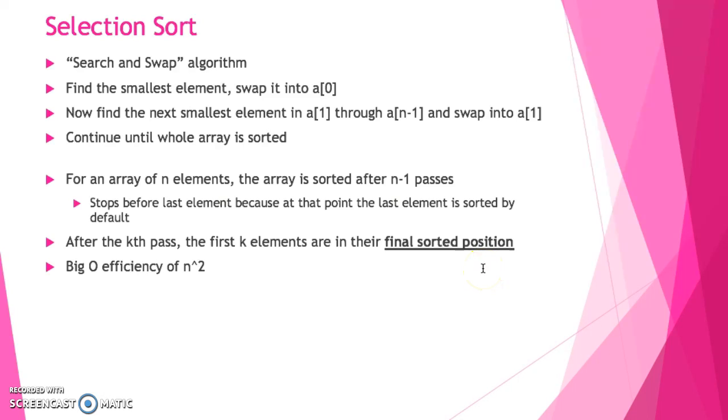The reason why those are the final sorted position is because the way that selection sort works is it finds the smallest element and sorts it, and then the next smallest element and sorts it. So if we have gone through this algorithm and done, for example, three iterations of it, then that means that the first three elements are going to be sorted. We say that a selection sort has a big O efficiency of n squared, and that's essentially the worst-case scenario for a selection sort.